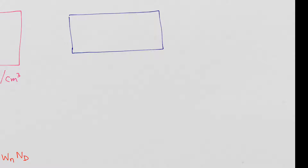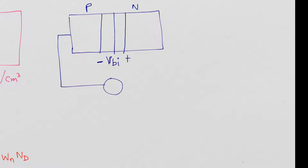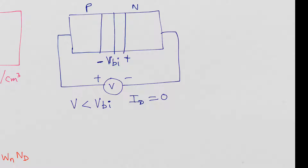Now let's look at the P plus N diode under forward bias. Without any voltage applied, you have a depletion layer and a built-in potential VBI, with plus on the N side and minus on the P side. We now apply a forward voltage V — plus on the P side, minus on the N side. As long as V is less than VBI, the diode current ID is essentially zero — very, very negligible.